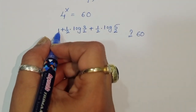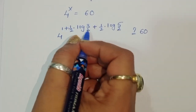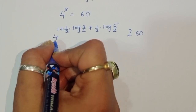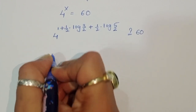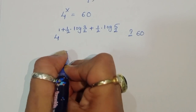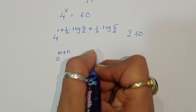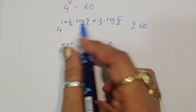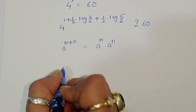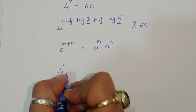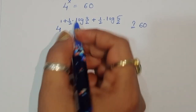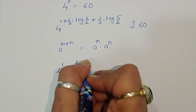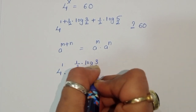We use the formula a power (m plus n) equals a power m times a power n. So 4 power x becomes 4 power 1 times 4 power (one-half times log of 3 to the base 2) times 4 power (one-half times log of 5 to the base 2).